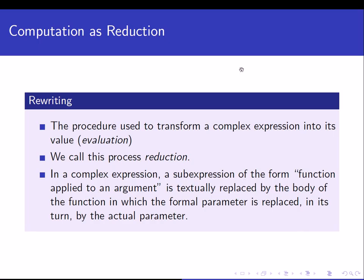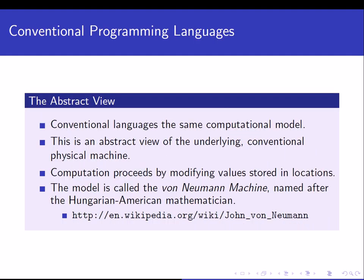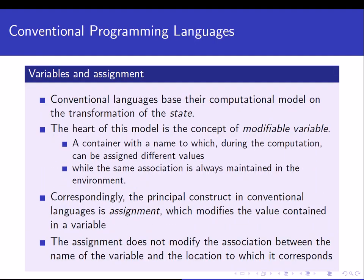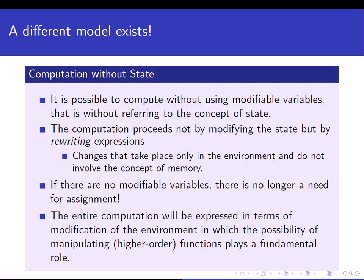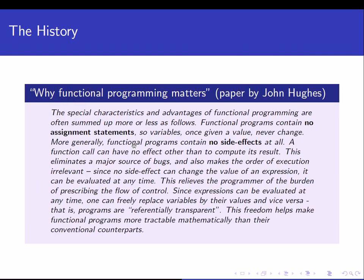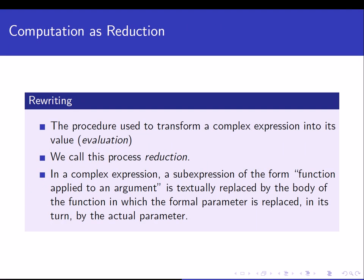We were talking about the characteristics of the functional paradigm. Going back, we said that a different model existed than the conventional von Neumann machine model — computation proceeds not by modifying the state, but by rewriting expressions. So rewriting is the procedure used to transform a complex expression into its value, and we call this process reduction.